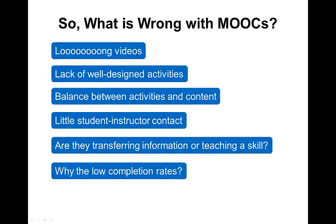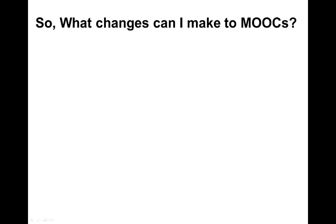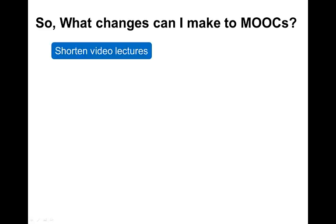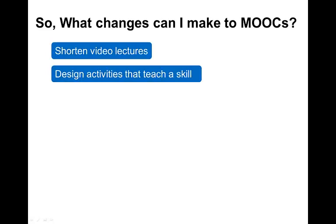So what changes can I make to MOOCs? This is the final part of my presentation. First, I will shorten the video lectures — this is a no-brainer, and the University of Florida will start doing this. Then, we need to design activities that teach a skill. MOOCs are very ambitious — they want students to achieve many things. But if you design a MOOC so that students achieve just one or two things, that would add tremendous value. Teaching a skill would be the way to go, because I really doubt MOOCs are going to morph into university-level courses.